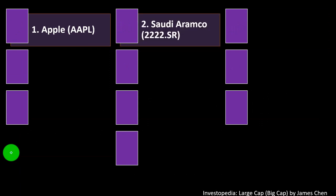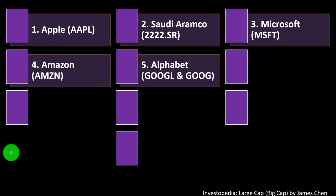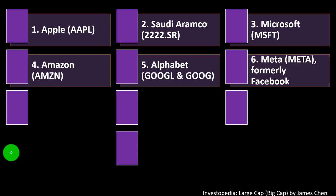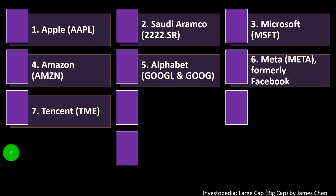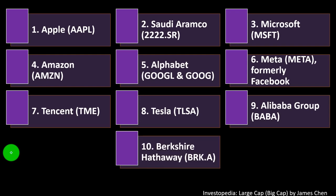Number 1: Apple. Number 2: Saudi Aramco. Number 3: Microsoft. Number 4: Amazon. Number 5: Alphabet (Google). Number 6: Meta (formerly Facebook). Number 7: Tencent. Number 8: Tesla. Number 9: Alibaba Group. Number 10: Berkshire Hathaway.